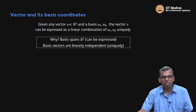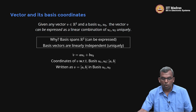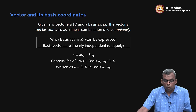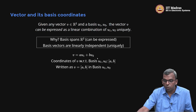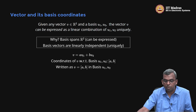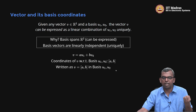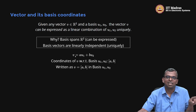So if you have a basis, any vector can be expressed uniquely in terms of the basis. That unique expansion is V equals A*U1 plus B*U2, and A and B are unique. The coordinates of V with respect to the basis U1, U2 are (A, B). The coordinates of a vector are the coefficients of the linear combination of basis vectors that gives you that vector itself. In this course, we write this as V = (A, B) in basis U1, U2.